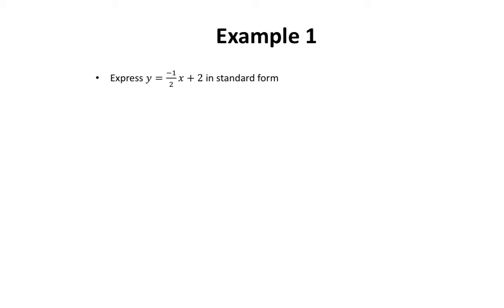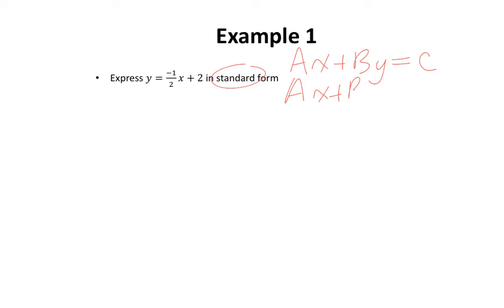In our first example, we want to express y equals negative 1 over 2x plus 2 in standard form. It is important to remember that standard form can be expressed as ax plus by equals c, or ax plus by plus c equals 0. Both are equally correct. I'm going to be using the second one.